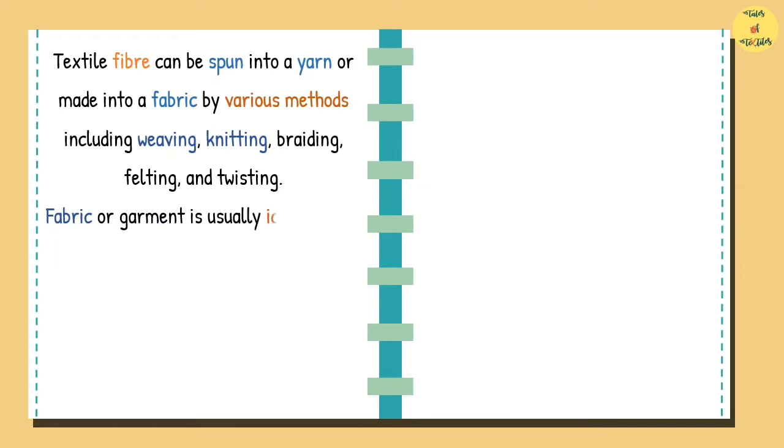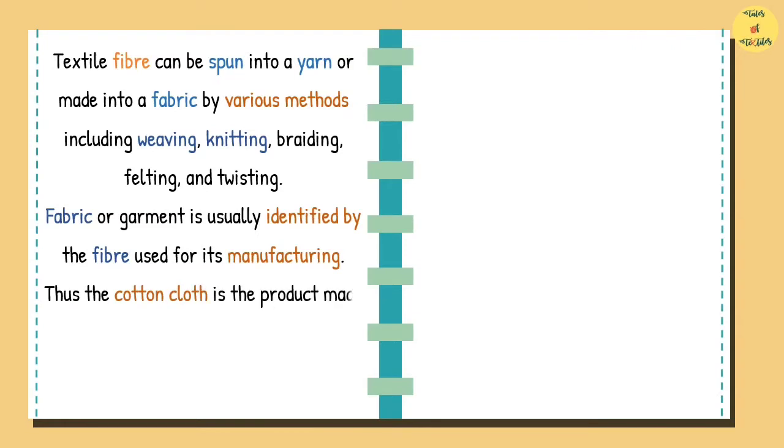Fabric or garment is usually identified by the fiber used for its manufacturing. Thus the cotton cloth is the product made out of the cotton fiber, the woolen cloth from the wool fiber, and so on.